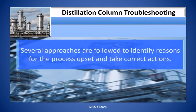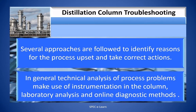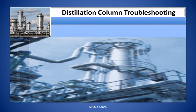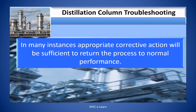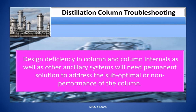Several approaches are followed to identify reasons for the process upset and take corrective actions. In general, technical analysis of process problems makes use of instrumentation in the column, laboratory analysis, and online diagnostic methods. In many instances, appropriate corrective action will be sufficient to return the process to normal performance. In some situations, preventive actions are required as a long-term solution. Design deficiency in the column and column internals will need permanent solutions to address sub-optimal or non-performance of the column.